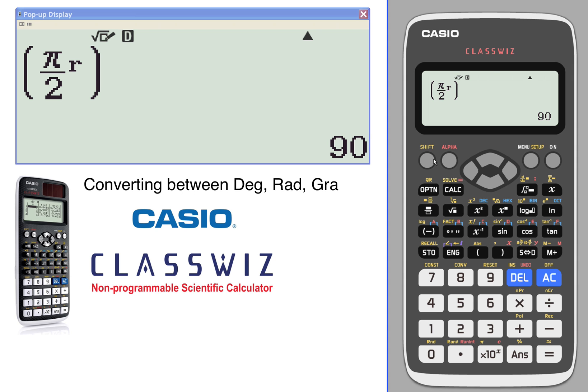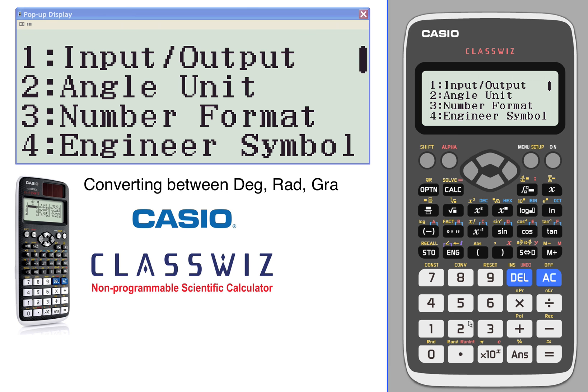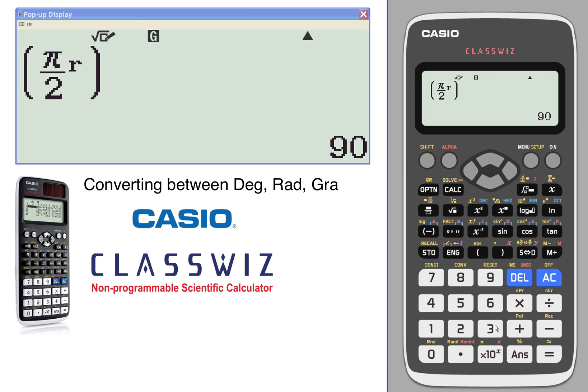Let's convert that to a gradient. So in order to convert that to a gradient, we can change our degrees. We go into menu, we go into the units, and we want to go gradient this time.